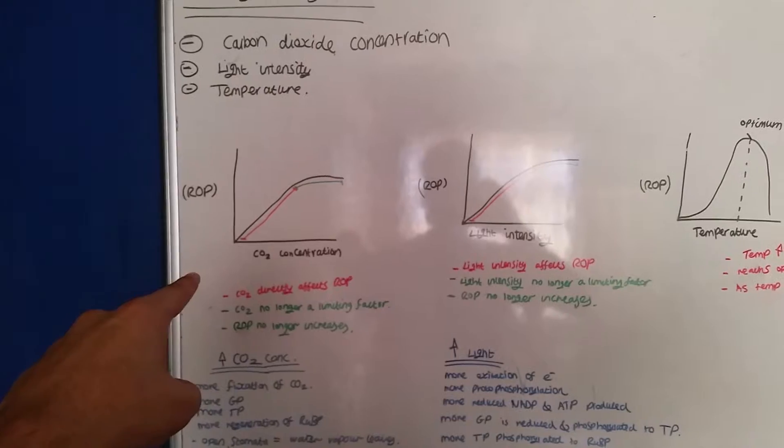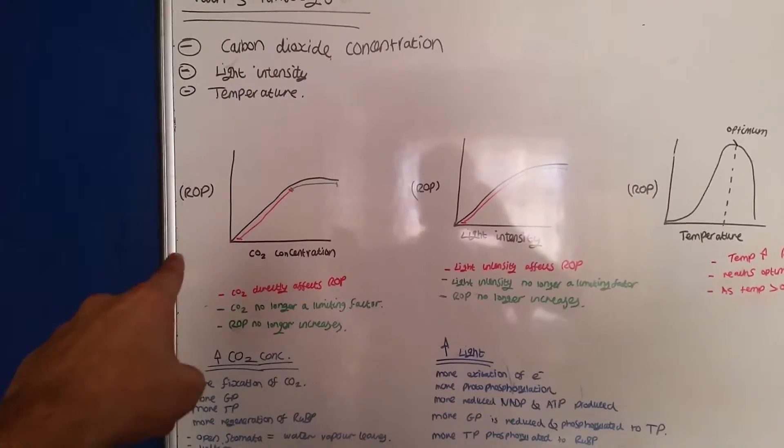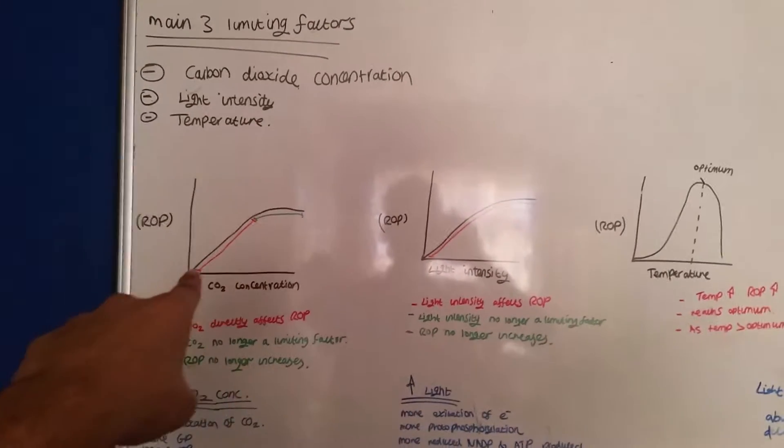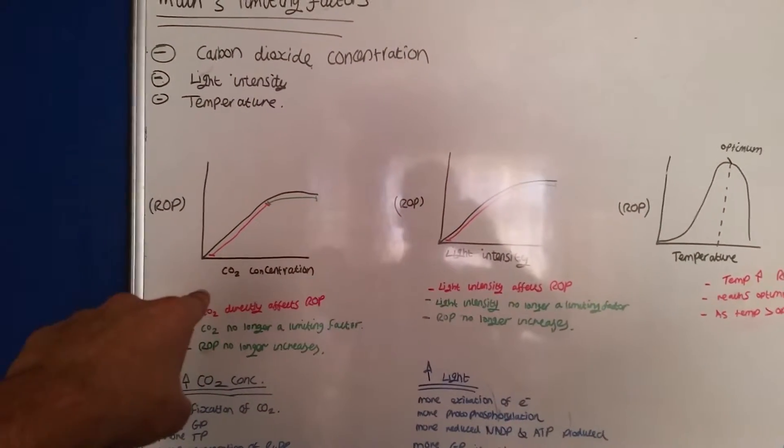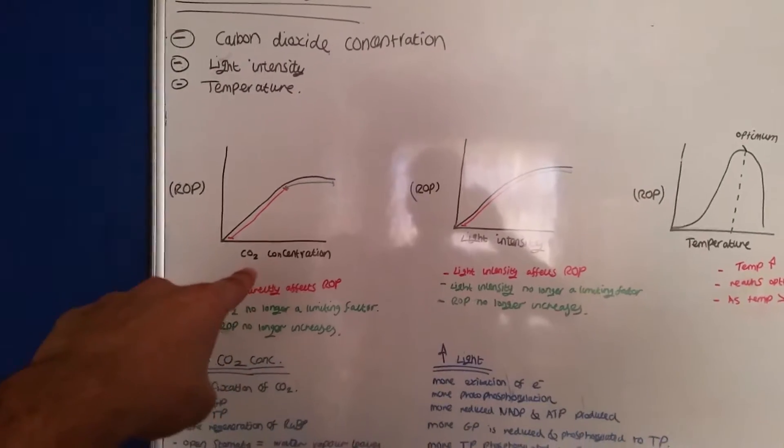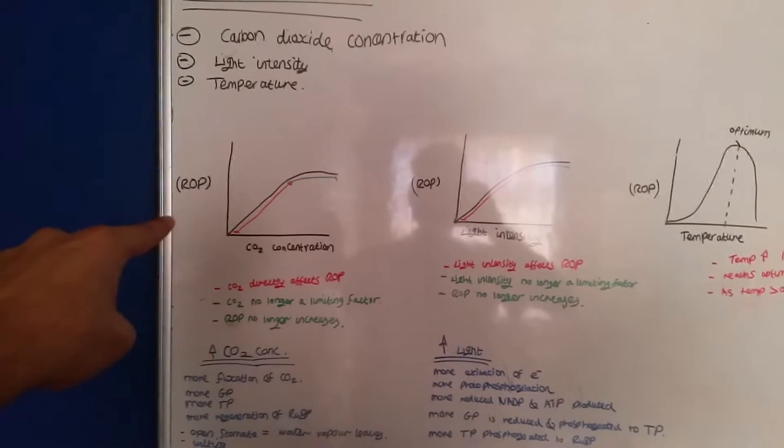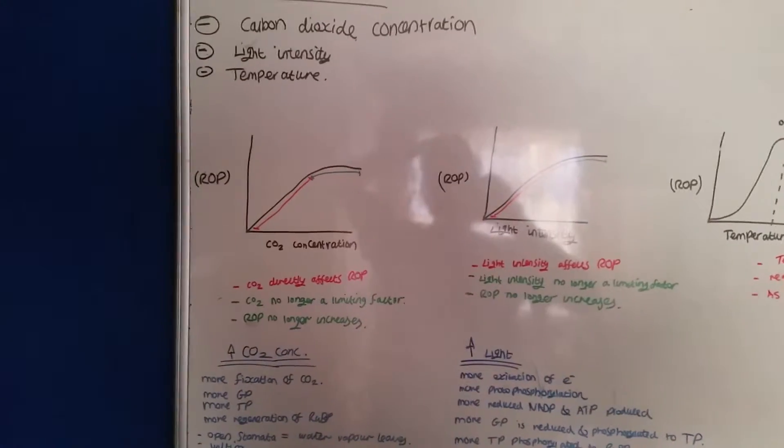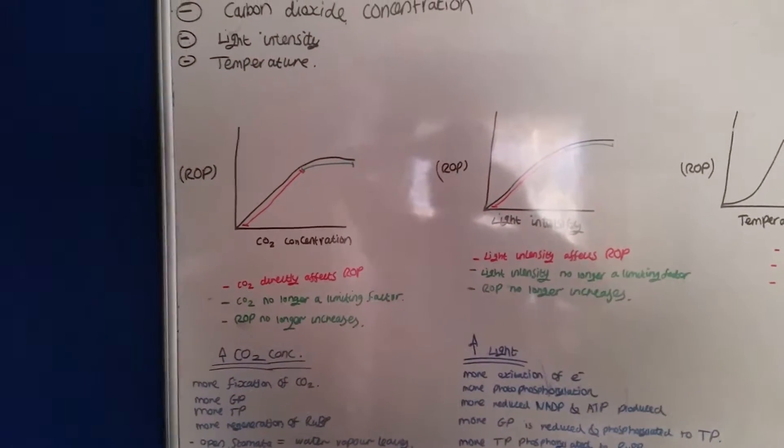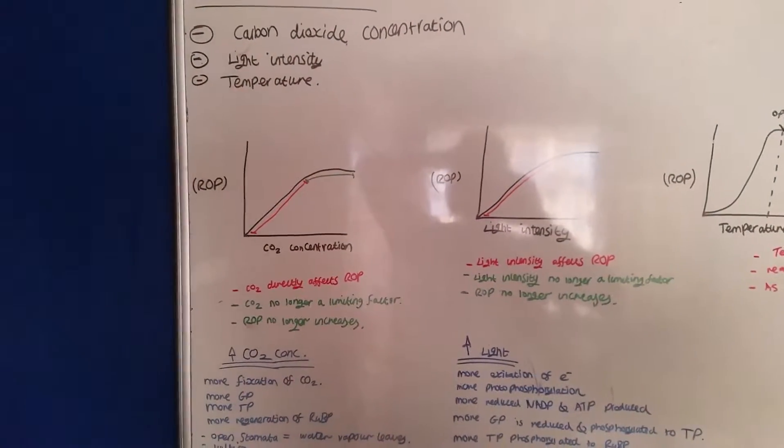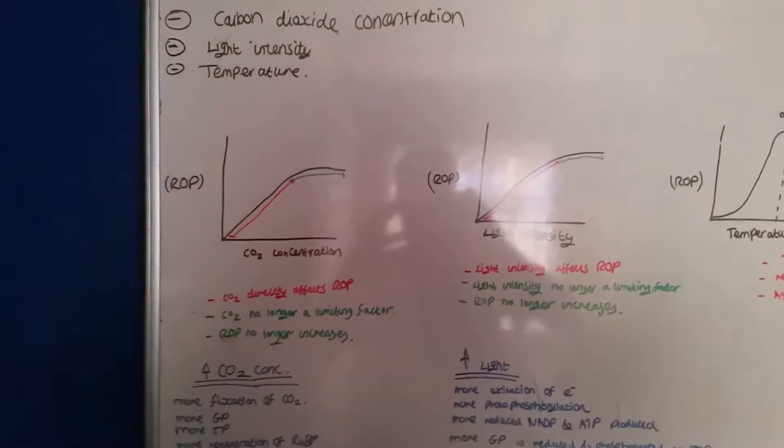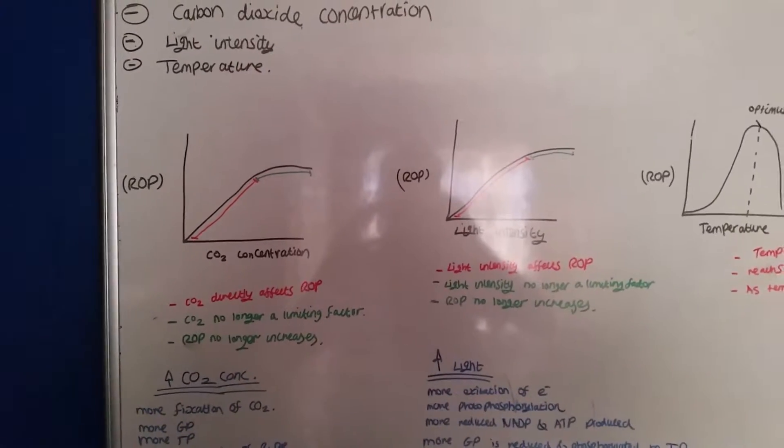I've drawn all the graphs. ROP stands for rate of photosynthesis. So as CO2 concentration increases, the rate of photosynthesis increases. The CO2 concentration is directly affecting rate of photosynthesis. However, the rate of photosynthesis slows down and CO2 concentration no longer becomes a limiting factor. There is another factor that is affecting rate of photosynthesis.